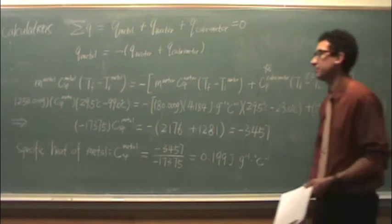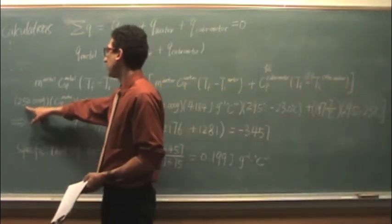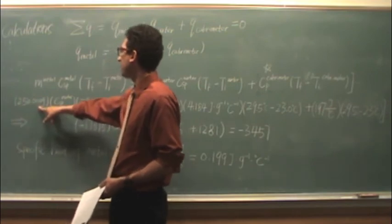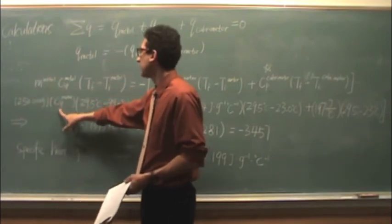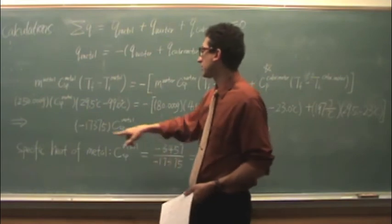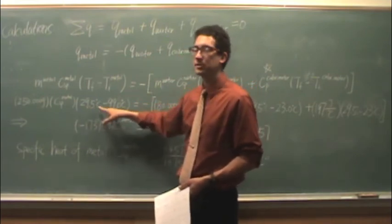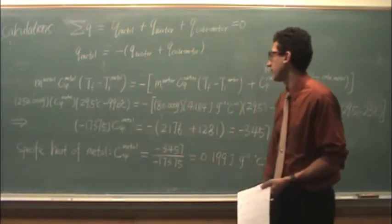Okay, let's go on. So we have the m. We plug that in for the mass of the metal. The CP of the metal, that's what we're looking for. And then here's the temperature difference that we showed you earlier.